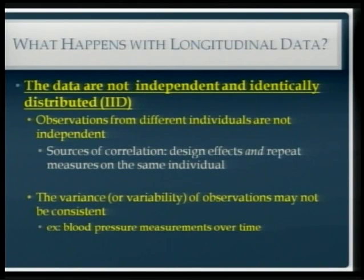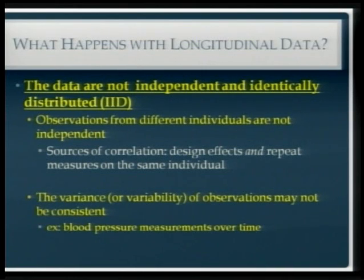However, with longitudinal data, a lot of those assumptions are violated. The biggest one is that observations from different individuals are not independent — they're correlated. Knowing Andrew's blood pressure tells you something about Hannah's if they're seen in the same clinic, are in the same classroom, or are in the same family. Anything that links them together means their observations will be correlated, which violates the assumptions of a regular model.